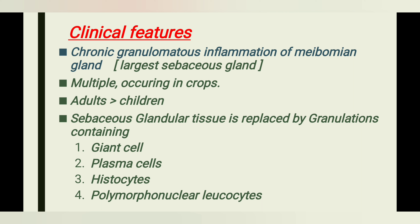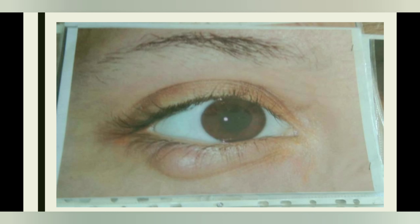Sebaceous glandular tissue is replaced by granulation tissue containing giant cells, plasma cells, histiocytes, and polymorphonuclear cells. This is the clinical presentation of chalazion.